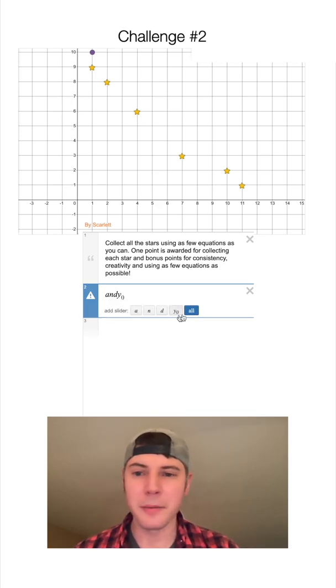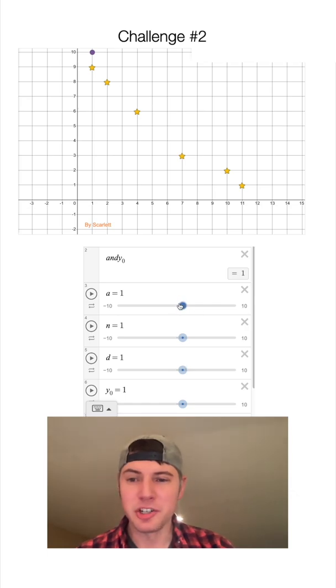and then y underscore zero. And now you can see here, I have four parameters. I'm going to hit all. And now these are four parameters that we can adjust.